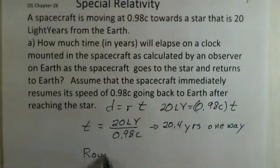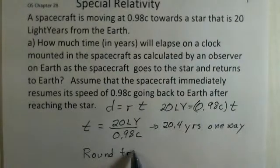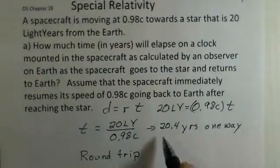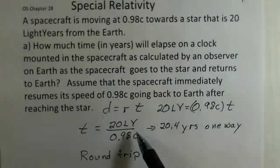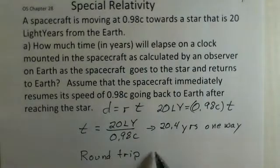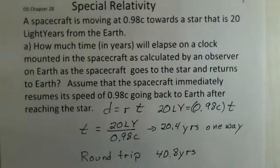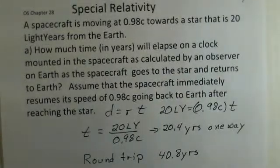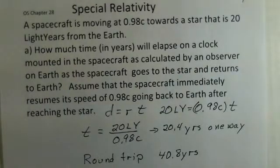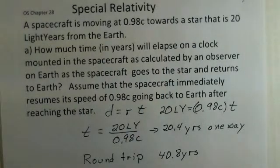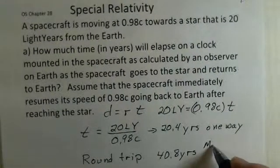So how long would the round trip take? This is one way. We're going to ignore the time to slow down and speed up to come back to the Earth. So we just double this. It'll be 20.4 years coming back. It's the same distance coming back as going out. And we'll have 40.8 years. That's the round trip time for the spacecraft. This time is the time measured by the Earth's observer.